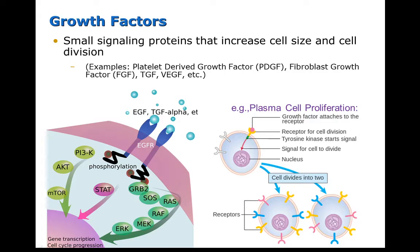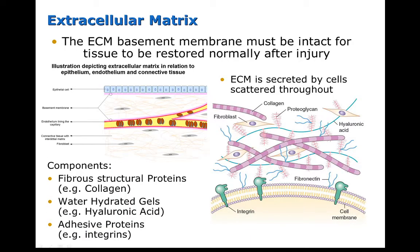Cell proliferation is triggered by growth factors. Growth factors are small signaling proteins that increase cells in size and also increase the rates of cell division. The extracellular matrix is a network of extracellular molecules such as collagen, enzymes, and water-hydrated gels, and these provide structure to the cell.